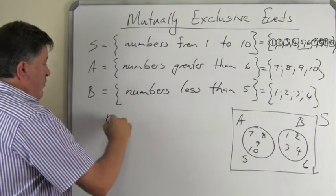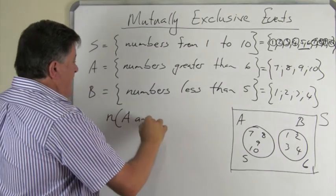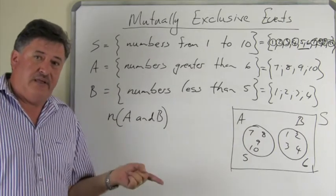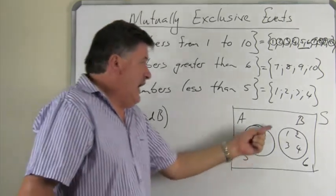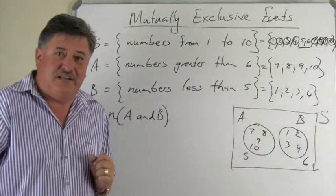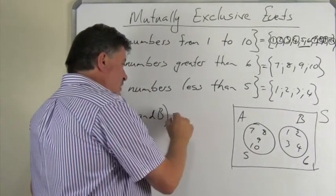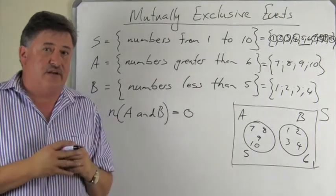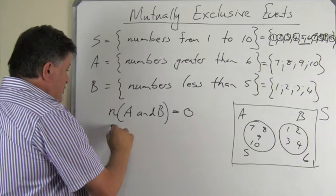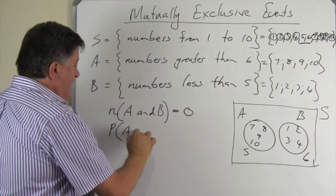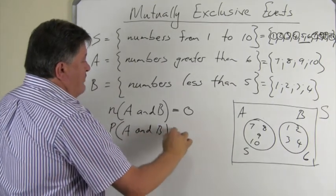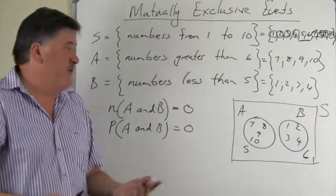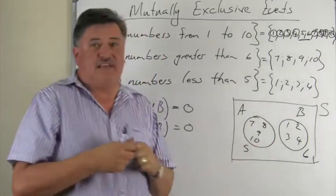So, what will you say if I ask you the question, what is the n(A and B)? There are no outcomes in both, so you will hopefully agree with me it is 0, or you can say 0 over 10 or just 0. If I ask you what is the P(A and B), of course you will also tell me it is 0, because it can't happen.